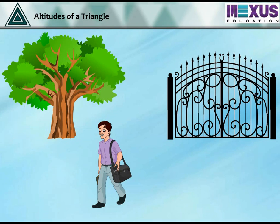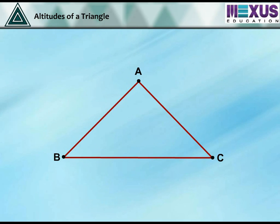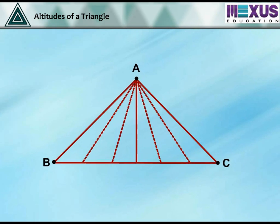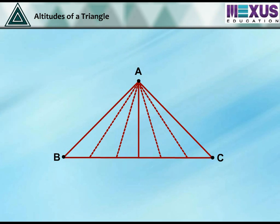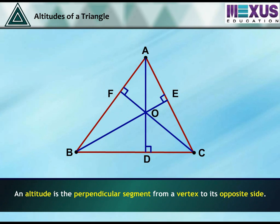Altitudes of a triangle. In daily life, you might have come across the word height. The height of an object is measured from its top point to its base. For a triangle ABC, the height is the distance from vertex A to base BC. There can be many lines from A to BC, but the height is the length of the line segment that starts from A and is perpendicular to BC. The line segment AD is the altitude of the triangle. An altitude is the perpendicular segment from a vertex to its opposite side, and it can be drawn from each vertex.